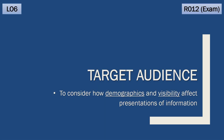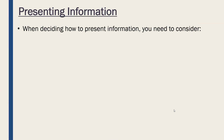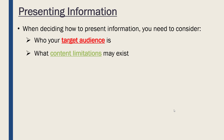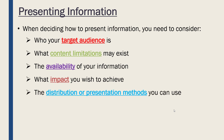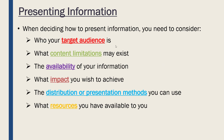We're now going to consider how two key aspects of a target audience — demographics and visibility — can affect how we present our information. In the coming videos we'll consider lots of different points you need to think about when presenting or sharing information. Today we're looking at the target audience, limitations on content, availability of information, your desired impact, the methods you use to distribute or present information, and the resources available to you like hardware and software. We'll look at each of these in turn, starting with target audience.